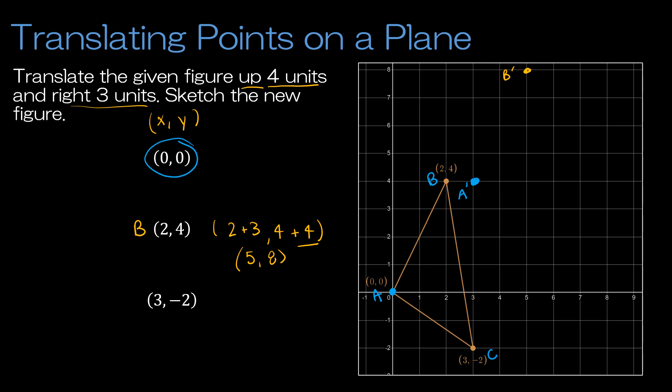And then of course, the same thing for C. C is at (3, -2). I can either just count, or again, I can take 3 plus 3 and -2 plus 4, which would give me (6, 2). So 6, 2 would be right here, and that would be C prime. And of course, then my new figure should look exactly like the other figure just moved up and to the right.